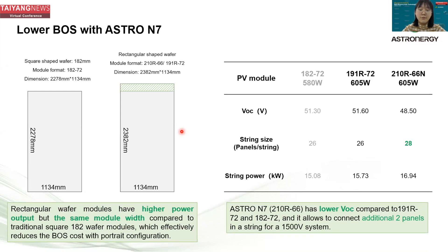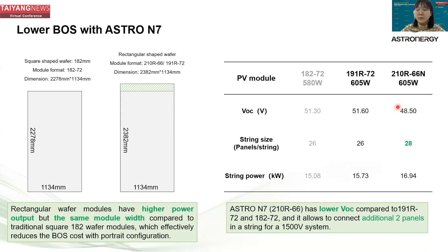The right-hand side table shows the VOC and string size and string power for the three modules. We know the smaller the VOC, the larger the string size. Because 210 rectangular 66 has the smallest VOC, we can connect an additional two panels per string for a 1,500V system, comparing with 182×72 and 191 rectangular 72.